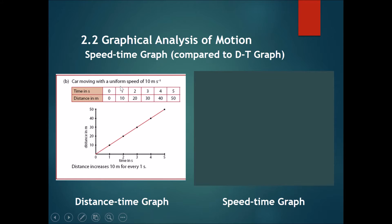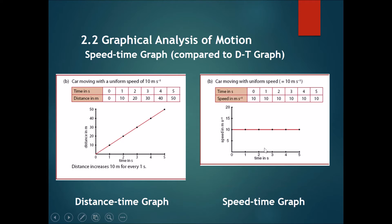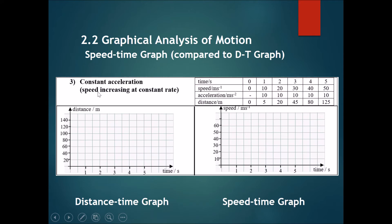When the car is moving at a uniform speed, on a distance-time graph it will be a straight diagonal line. However, on a speed-time graph the speed will be constant. So plotting the graph — at time 0 the speed is 10, at time 1 the speed is 10, at time 2 the speed is 10 — and onwards, you will get a straight horizontal line.